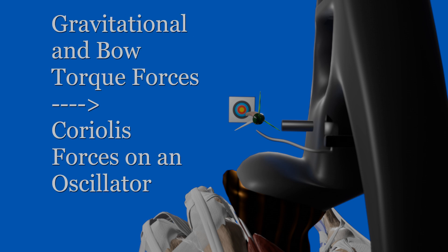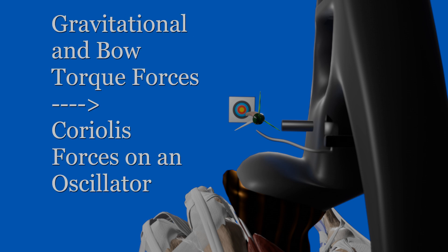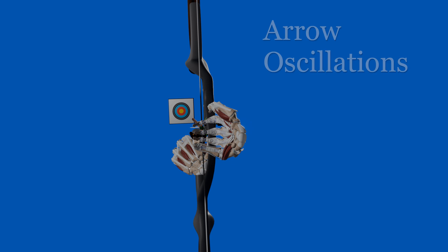Not so simply stated, I believe arrow clocking is due to Coriolis forces placed on an oscillator, the arrow, by combined gravitational and bow-imparted forces. We will start with the oscillator, the arrow.